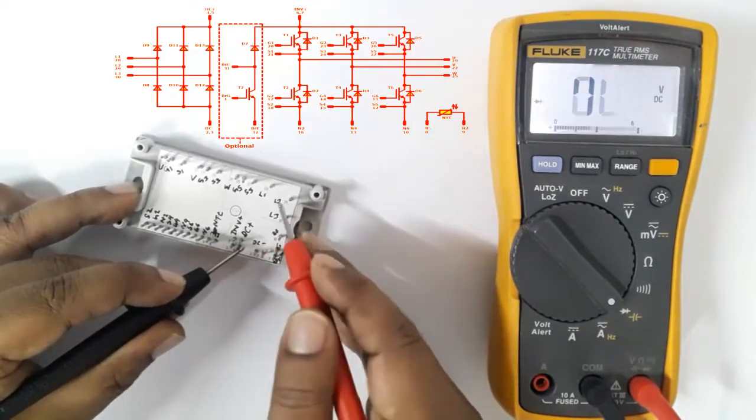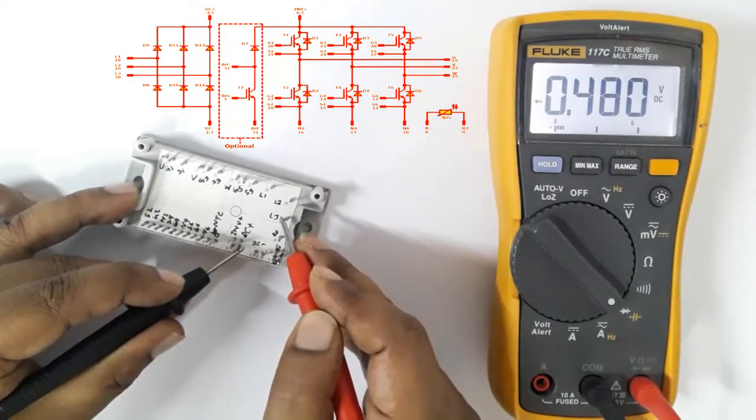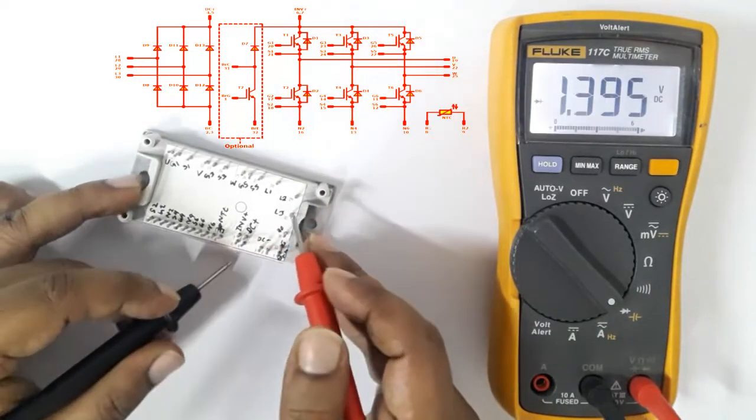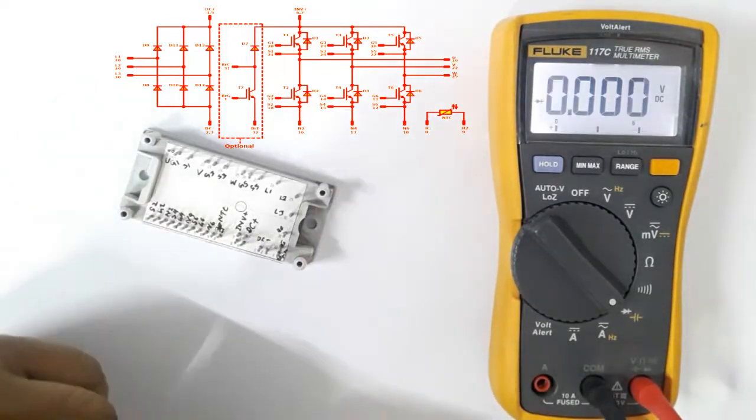This one is R, this one is S, and this one is T. All are about 0.4 volts DC. This unit is for converter.